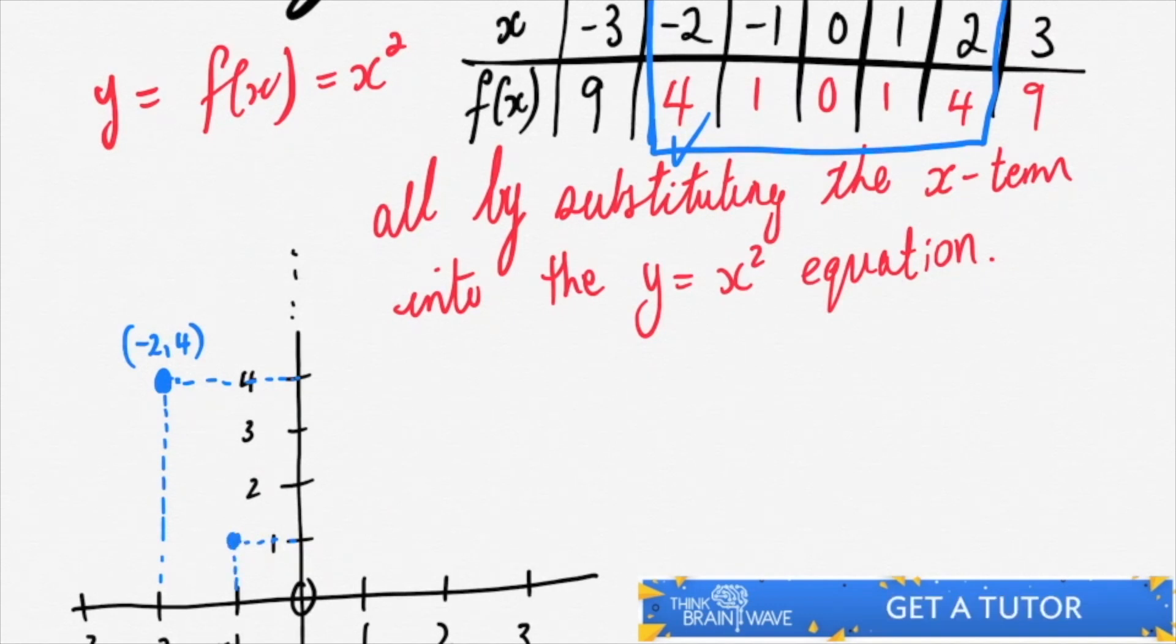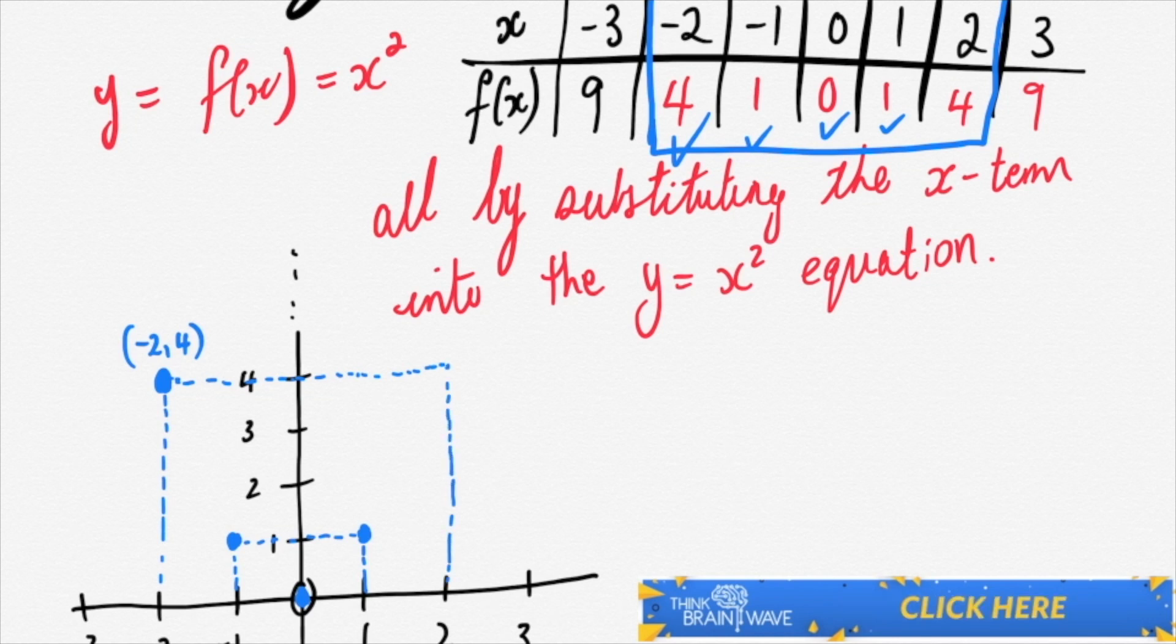We do so for all the other points: minus 1 and 1 up, then 0, 0 which is at the origin, then 1 across and 1 up, and 2 across and 4 up. We now have five points plotted.